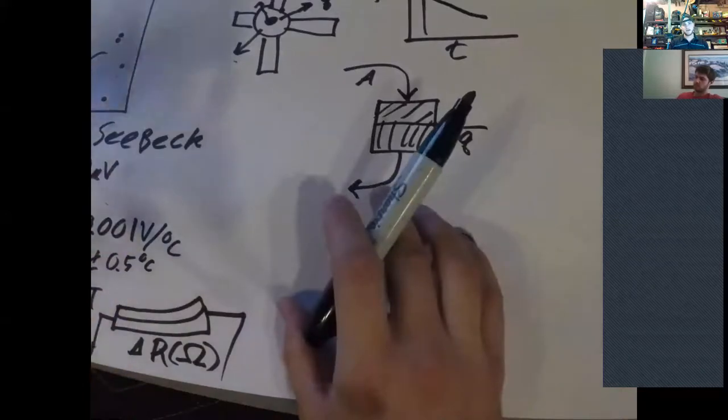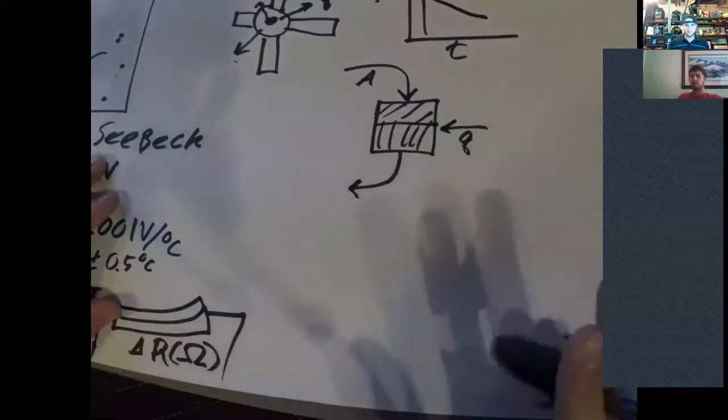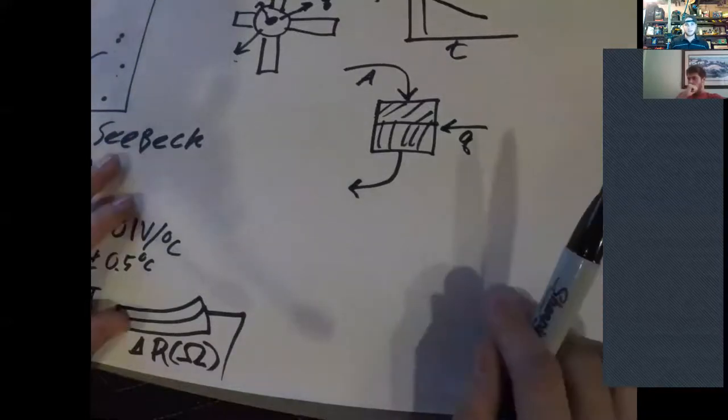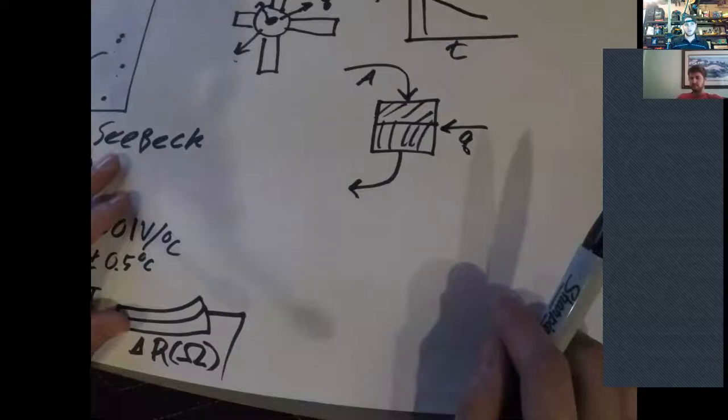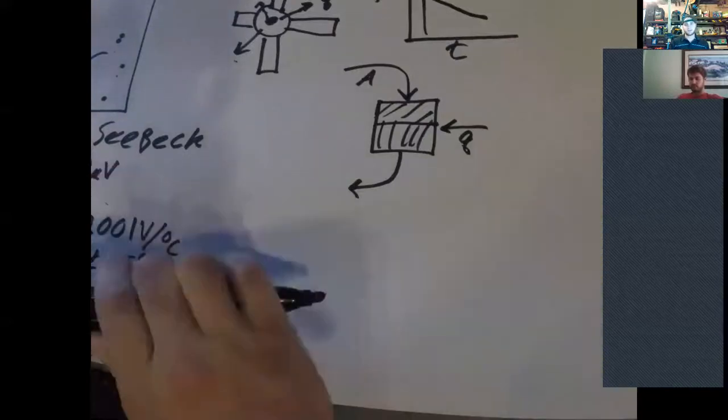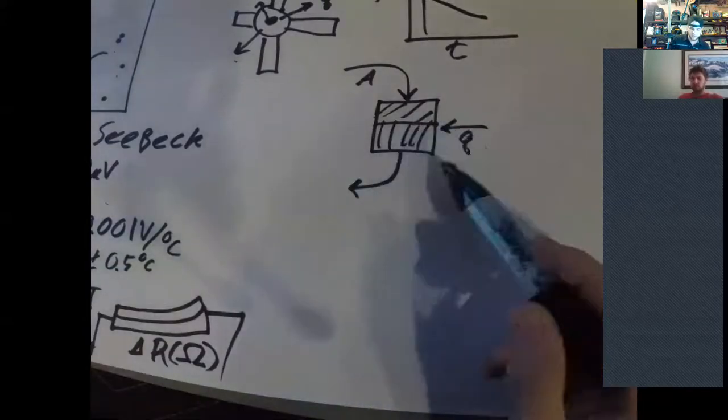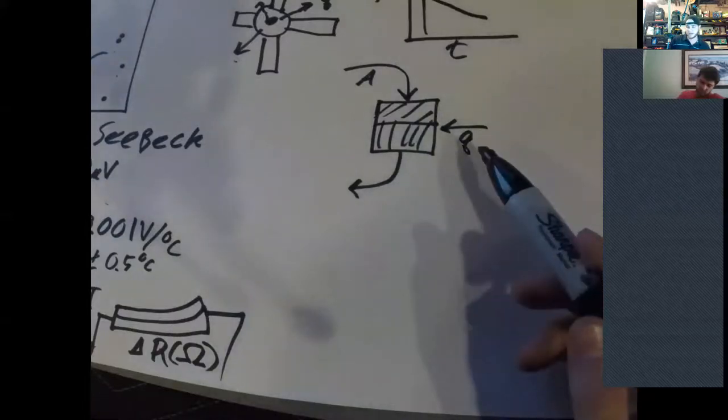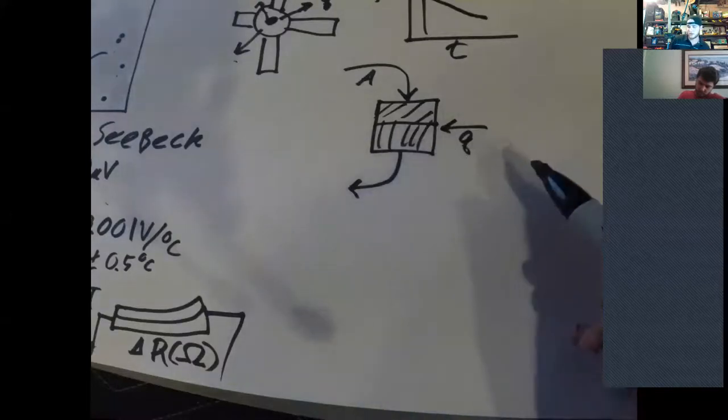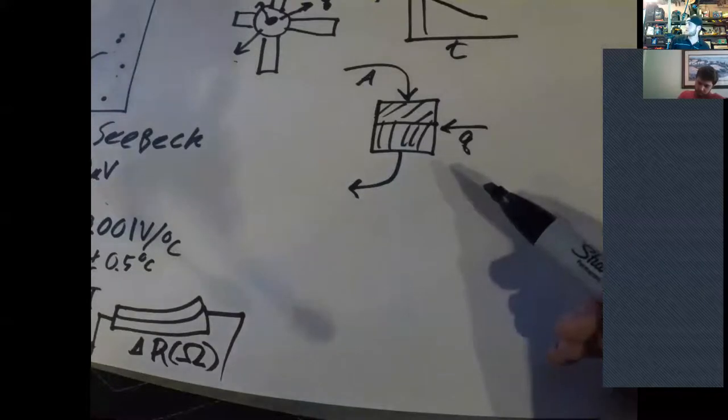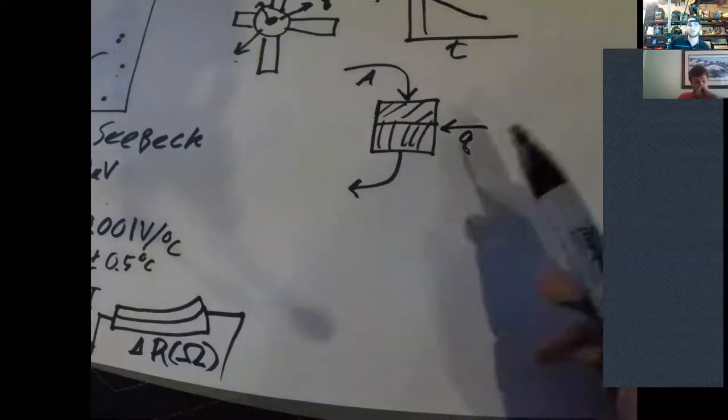But that's how they power because long-term they can pretty reliably generate power using the decay from this nuclear material. And basically the guys at NASA figured out, okay, we're gonna start out over time using this effect. We're gonna generate, let's just say five volts. And over time, as that nuclear material decays, we're gonna get less and less voltage out of this thing, right?